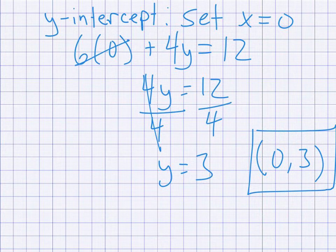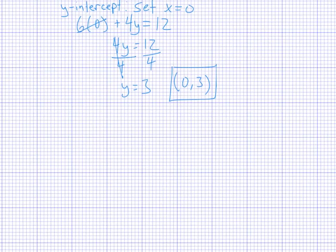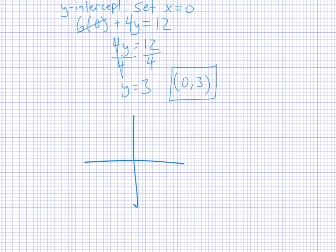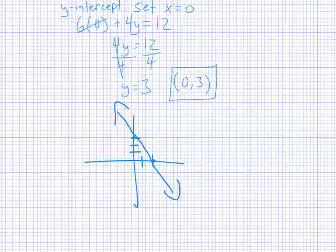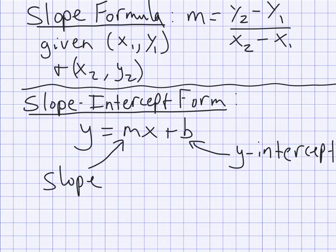One last note: you can use these two points to actually graph the equation. I'll make a quick coordinate axis — we had an x-intercept of (2, 0), so we go right 2 and plot that point. We had a y-intercept of (0, 3), so we go up three and plot that point. Then the line goes between both of these points. That's one way to graph equations: find the x and y-intercepts, plot those points, and draw the line.